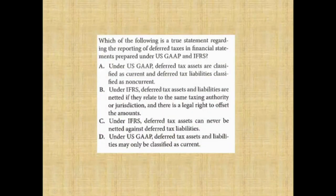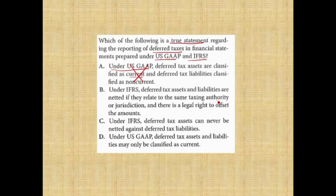Let's look at a practice question: which of the following is a true statement regarding reporting of deferred taxes under US GAAP and IFRS? Option A — under US GAAP, deferred taxes are classified as current and non-current — is incorrect; everything is non-current. Option B — under IFRS, deferred tax assets and liabilities are netted if they relate to the same taxing authority or jurisdiction and there is a legal right to offset — this is correct. Option C — under IFRS, deferred tax assets can never be netted — is false, they can be netted within the same jurisdiction. Option D — under US GAAP, deferred taxes may only be classified as current — is wrong; they are classified as non-current.